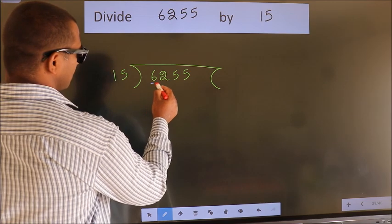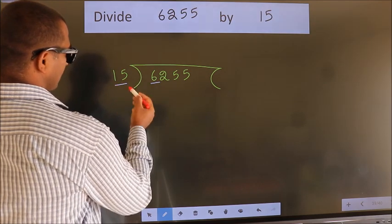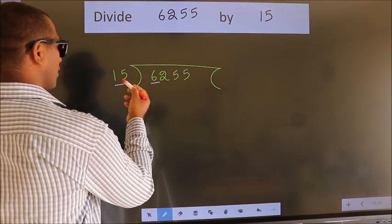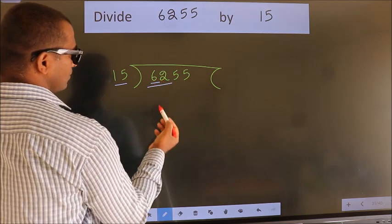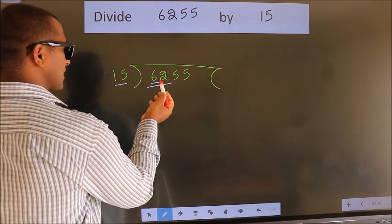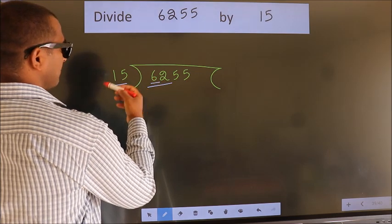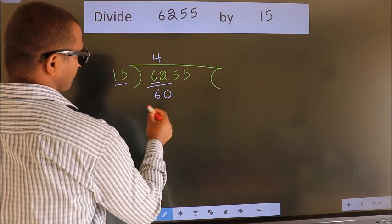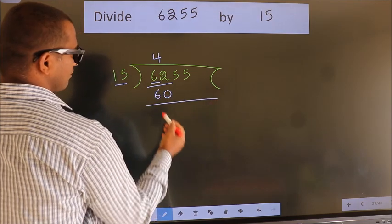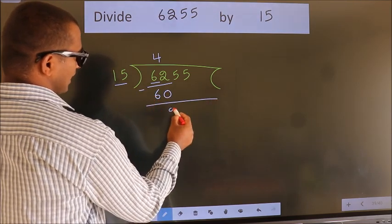Here we have 6. Here 15. 6 is smaller than 15, so we should take two numbers, 62. A number close to 62 in the 15 table is 15 fours, 60. Now we should subtract. We get 2.